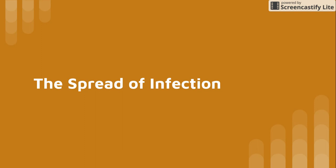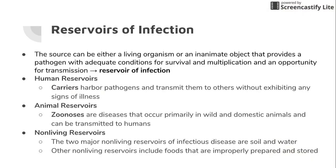Now that you have an understanding of normal flora in the body, how it helps us, and the etiology of infectious diseases — how they're caused and the types of infectious diseases — we're going to examine the sources of pathogens and how they're transmitted. We're going to talk about reservoirs. For a disease to perpetuate itself, there has to be a continual source of disease organisms, and that source is called a reservoir of infection.